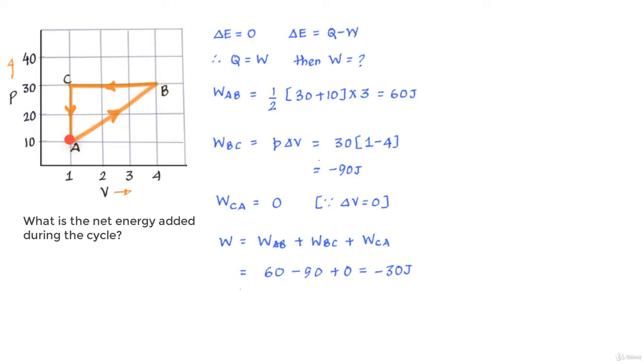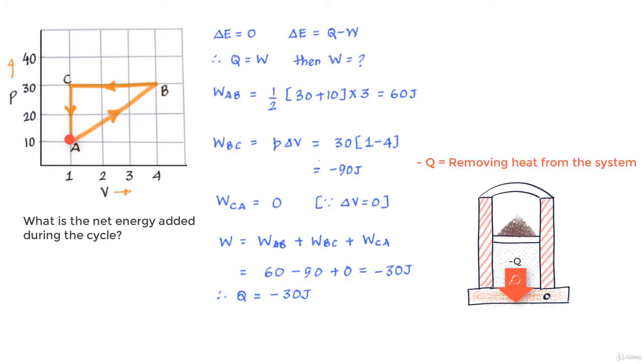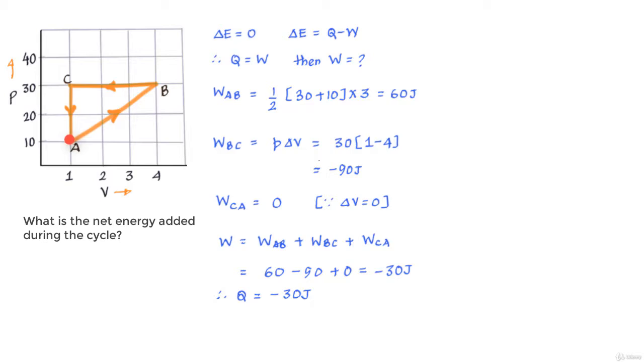And we earlier established that in this cyclical process Q is equal to W so Q here is equal to minus 30 joules. And if you recall from our lesson on the first law of thermodynamics a negative quantity of Q indicates a loss of heat by gas and therefore here the gas has lost 30 joules of heat.